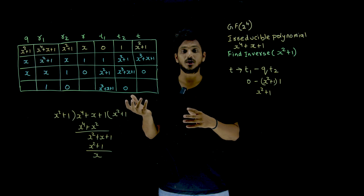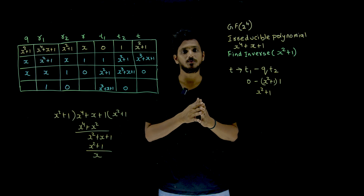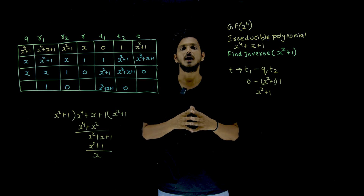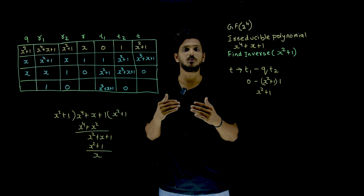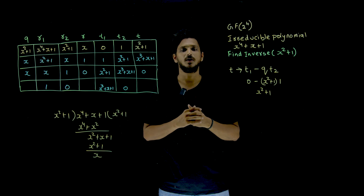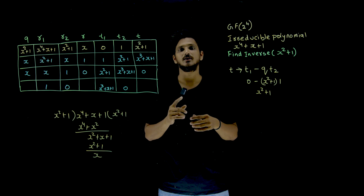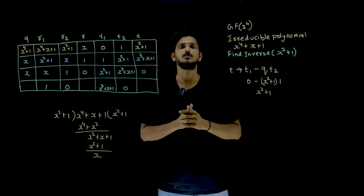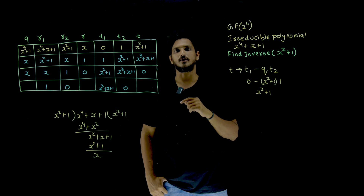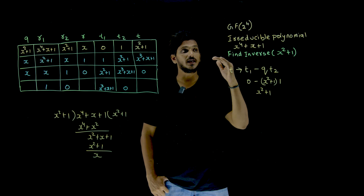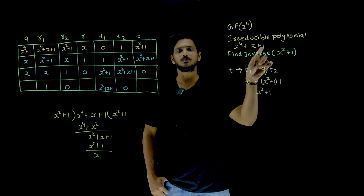In our previous classes, we clearly discussed about the multiplication operation and addition operation of GF(p^n), and we already discussed about the Euclidean algorithm. You are assumed to already have these basics. Let us take this example: GF(2^4) where the irreducible polynomial is x^4 + x + 1.